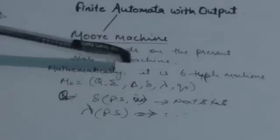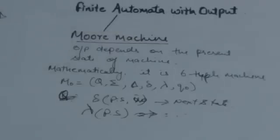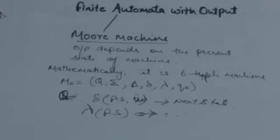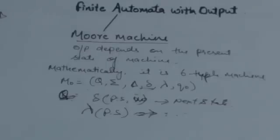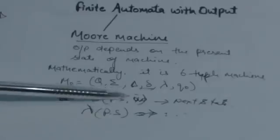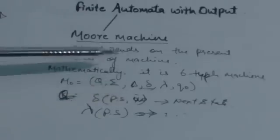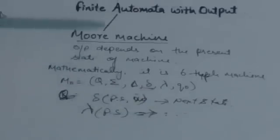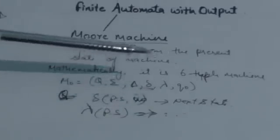Delta (Δ) is a finite set of outputs which this machine gives as output. Next is delta (δ), the transition function. It takes two arguments: first, the present state, and second, the input symbol, and it gives the next state as output.